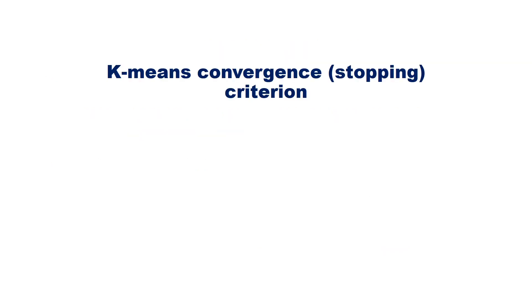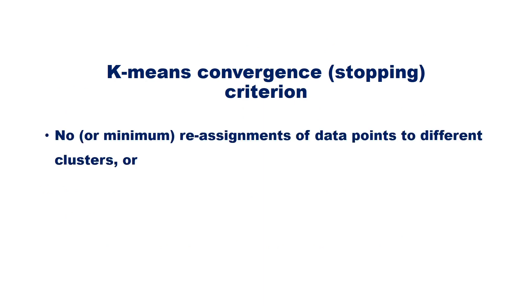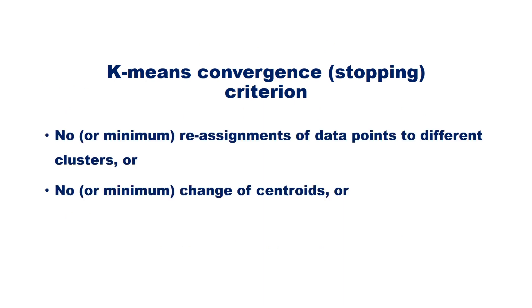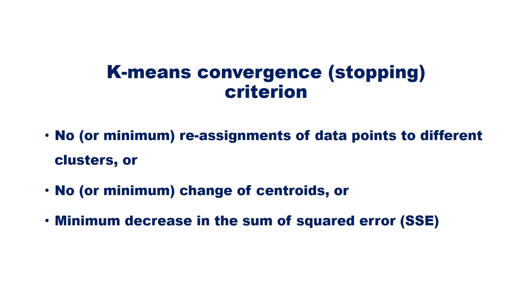K-means convergence or stopping criteria can be: no or minimum reassignments of data points to different clusters, no or minimum change of centroids, or minimum decrease in the sum of squared error. Sum of squared error means the sum of the square of the distance between the data point and the centroid of the cluster.